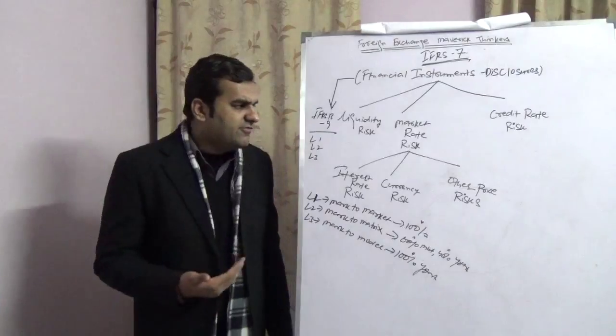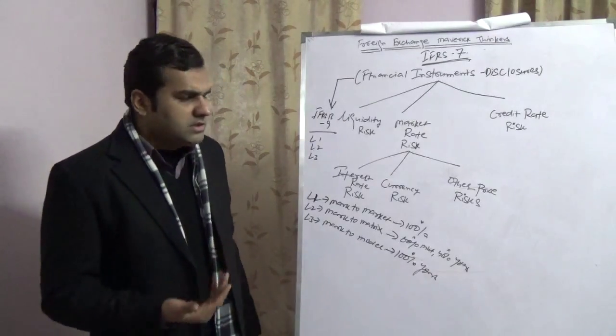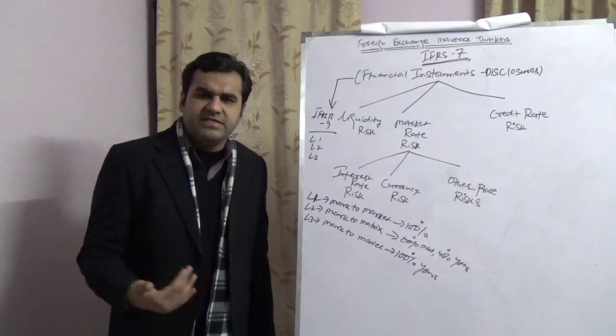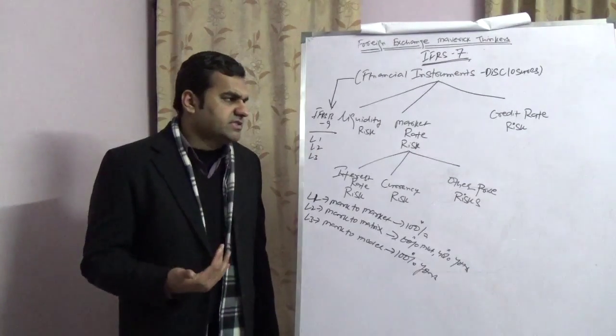That IFRS 7 is going to speak about. Third is the other price risk. Other price risk, I reiterate, is nothing but a risk which is besides your currency and interest rate risk.